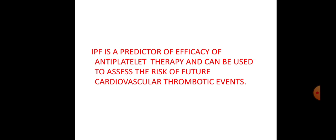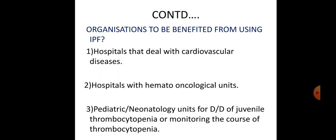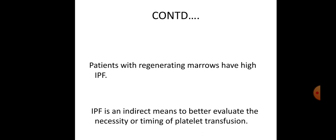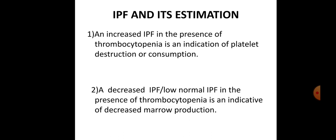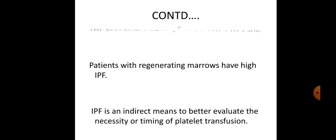IPF is a predictor of efficacy of anti-platelet therapy and can be used to assess the risk of future cardiovascular thrombotic illness. Certain organizations can benefit from using IPF, such as hospitals dealing with cardiovascular diseases, hospitals with oncological units, and pediatric or neonatal units monitoring thrombocytopenia. Patients with regenerating bone marrow have high IPF. IPF is an indirect means to better evaluate the necessity and timing of platelet transfusion. Remember two important points: an increased IPF in the presence of thrombocytopenia indicates platelet destruction or consumption; a decreased or normal IPF in the presence of thrombocytopenia indicates decreased bone marrow production. The reference range of IPF is between 0.9 to 7 percent. Thank you.